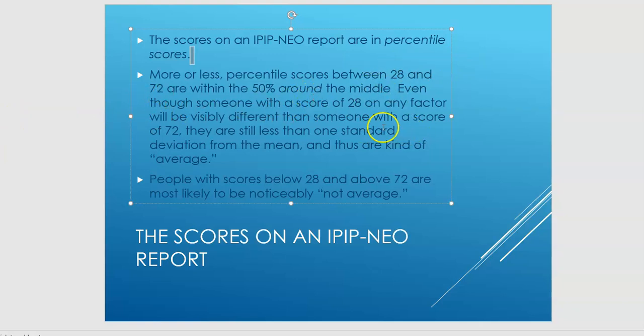Between 28 and 72 are the 50% around the middle. And there's still less than one standard deviation under this kind of average. Once you get more than one standard deviation above and below, then you are more sort of individually noticeably unique than otherwise.